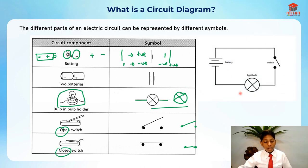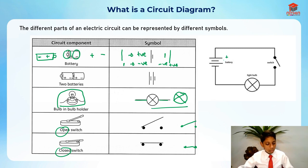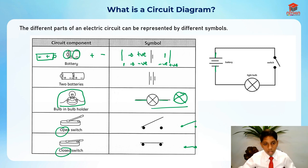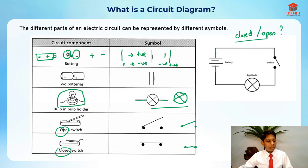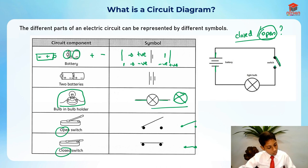Here is a circuit represented by these symbols. There are two batteries — the long one is positive and the short one is negative, going in positive-negative direction. The wires connect and ensure a closed circuit. But looking at the switch, this circuit is actually an open circuit because the switch shown is open, which means there is a gap in the circuit.